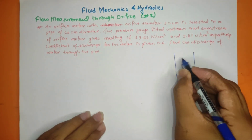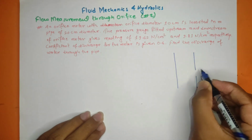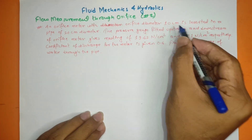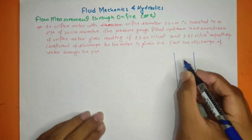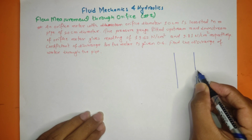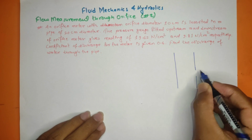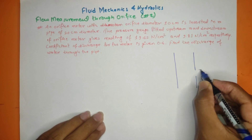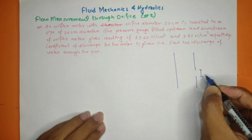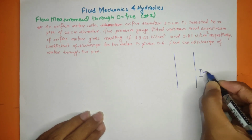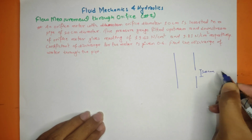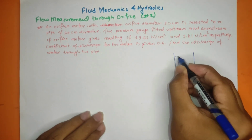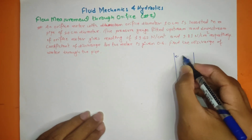This is the orifice meter of 20 cm diameter, and this is the orifice of 10 cm diameter. This is the orifice of 10 cm and this is the pipe of 20 cm.